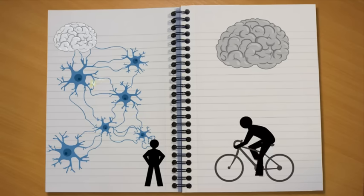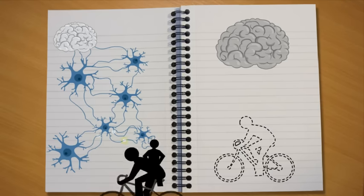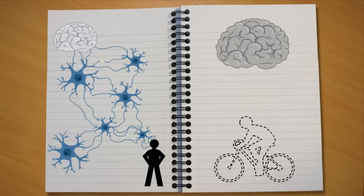But eventually, as you got more practice, the neurons sent messages backwards and forwards, until a pathway was created in your brain. Now you can ride your bike without thinking about it because the neurons have successfully created a bike riding pathway.